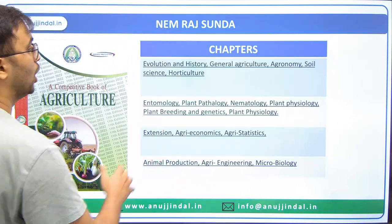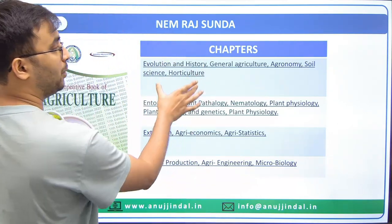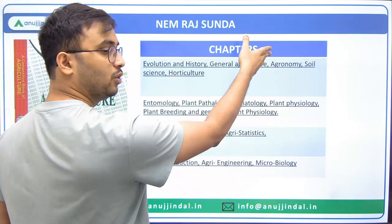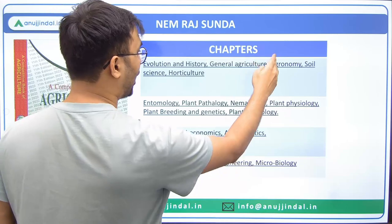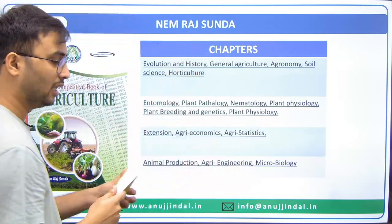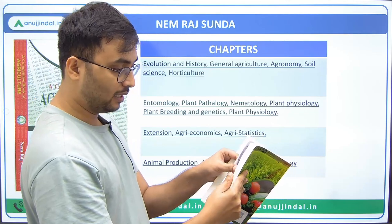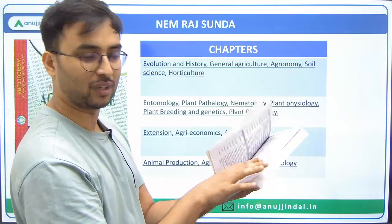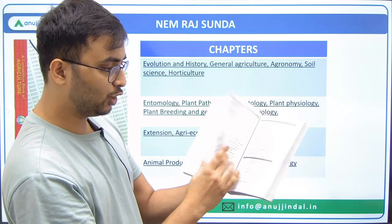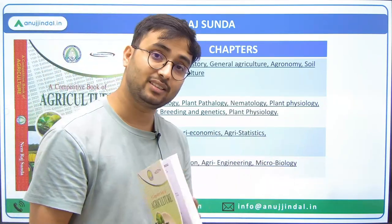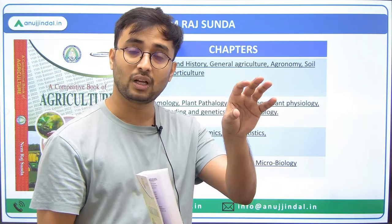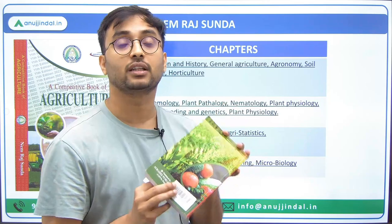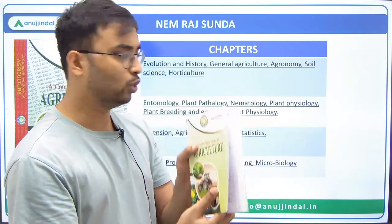Starting the chapters of Nimrat Sunda: the first introductory part covers evolution, history of agriculture, general agriculture, some of its branches, agronomy, soil science, and horticulture. Going through the index and content, this is a very rich book — personally read by me. It has content, statistics, figures, and concepts that are definitely asked in the NABARD Grade A exam.